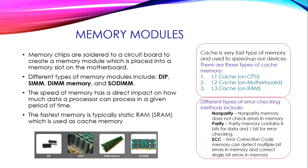Different types of memory also have different error checking methods. Non-parity memory does not check for errors. Parity memory contains 8 bits for data and 1 bit for error checking. Error Correction Code (ECC) memory can detect multiple bit errors in memory and correct single-bit errors.